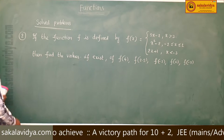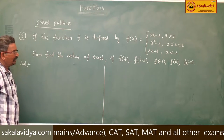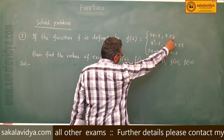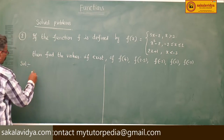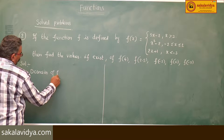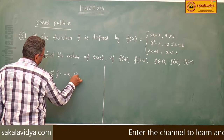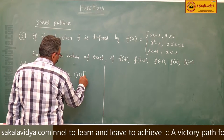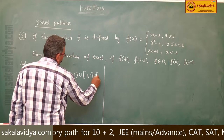First, let us define the domain of the function f(x). The domain of f consists of x > 3, and also −2 ≤ x ≤ 2, and x < −3. So the domain of f equals (−∞, −3) ∪ [−2, 2] ∪ (3, ∞).